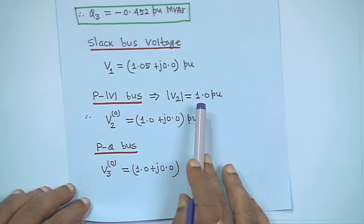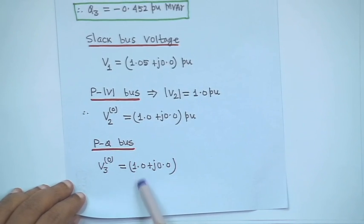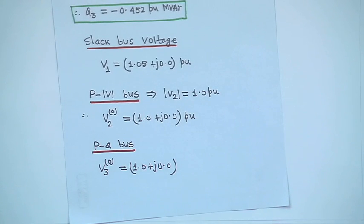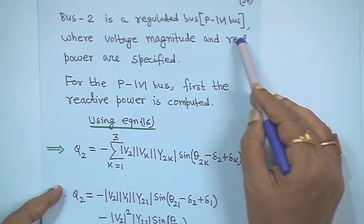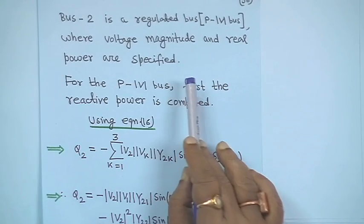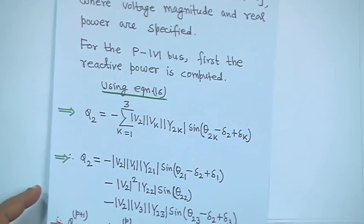For the PQ bus, V₃⁰ = 1 + j0, and both magnitude and angle will vary. For the PV bus (bus 2), this is a regulated bus where voltage magnitude and real power are specified. For the PV bus, the reactive power is first computed using equation 16.